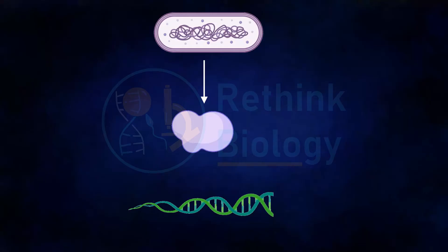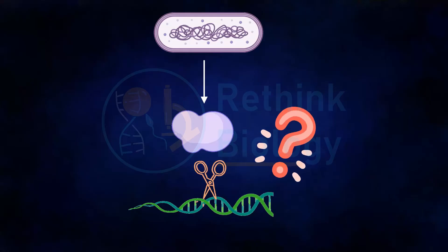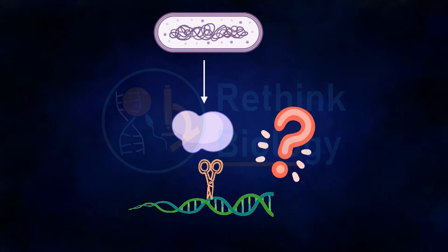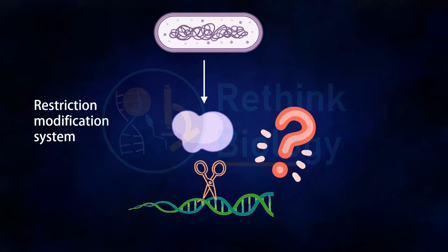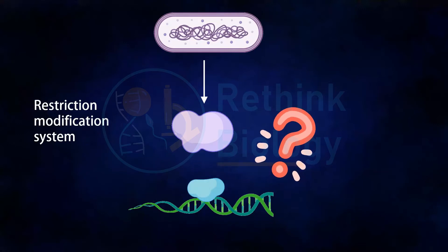A question might come to mind while studying restriction enzymes: if a bacterial cell produces these enzymes, how can it protect its own DNA from being cut by the restriction enzymes? The fact is restriction enzymes cannot cut their own DNA, because there is a system called the restriction-modification system. Specific enzymes present in that bacterium modify the restriction sites so that the restriction enzymes cannot recognize them.